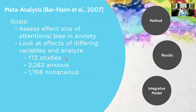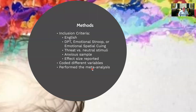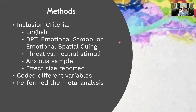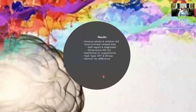They ended up including 172 articles, which had quite a few participants — 2,263 anxious compared to 1,768 non-anxious participants. They included studies based on criteria that the article had to be in English, had to use one of three attention bias tasks, and the researcher had to report a threatening versus neutral stimulus response rate. They also wanted to include studies that had anxious samples, and the effect sizes needed to be reported. So they coded those and performed this large analysis to see overall what's going on.